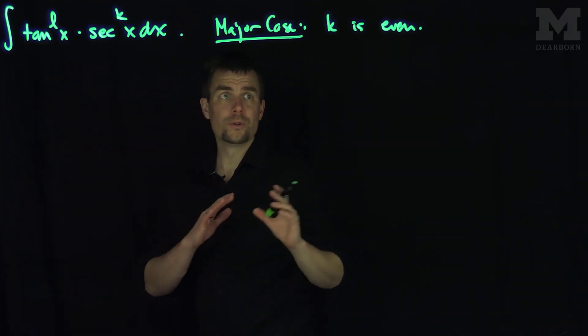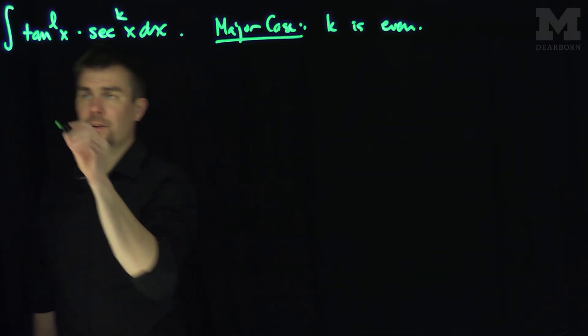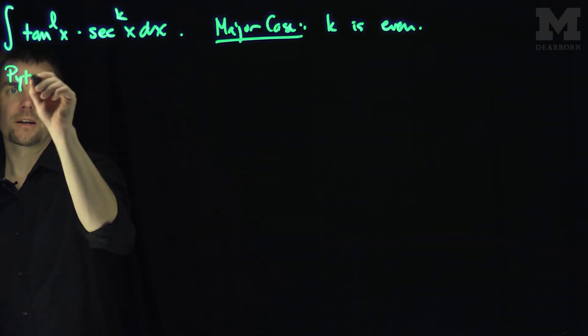If k is even, we're going to use the Pythagorean identity. So here's our Pythagorean identity.